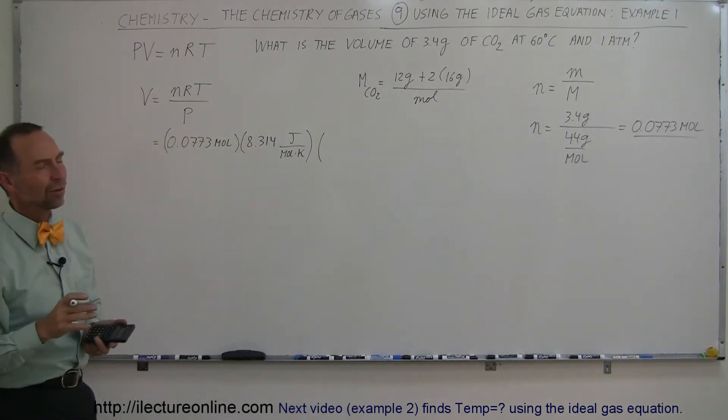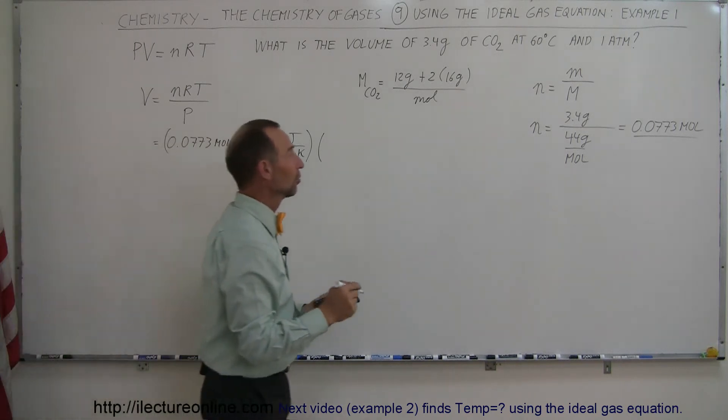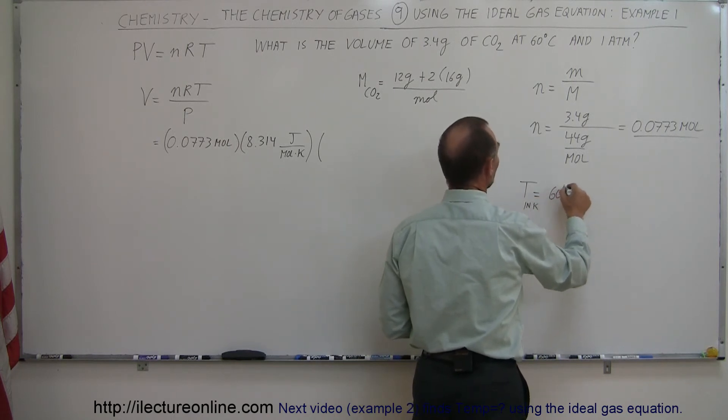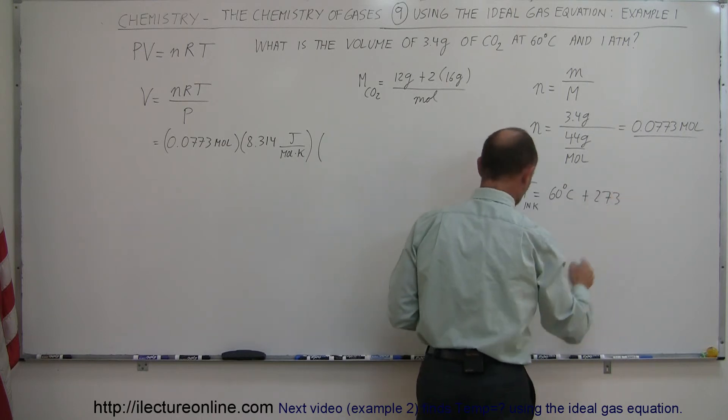Now this is 60 degrees centigrade, but we always have to convert centigrade degrees to Kelvin degrees. So we can say that temperature is equal to, in Kelvin, is equal to the 60 degrees centigrade plus 273.